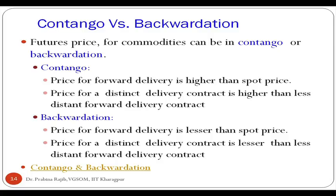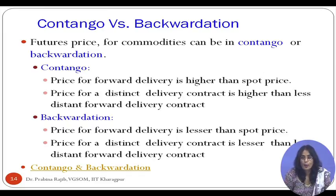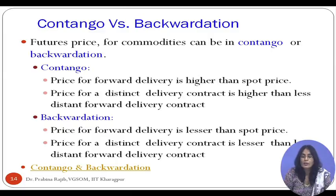Let us discuss contango and backwardation. Contango is a market where the forward or future price is more than the spot price — or a more distant delivery contract is priced higher than a less distant one: M1 > spot, M2 > M1. This market is known as a contango market. A backwardation market is one where M2 < M1, and M1 < spot. If the degree of backwardation is substantially high, even longer-maturity contracts may quote below the spot price.